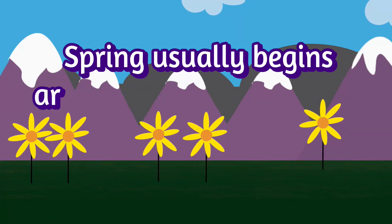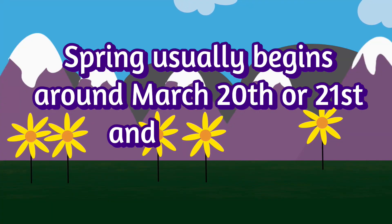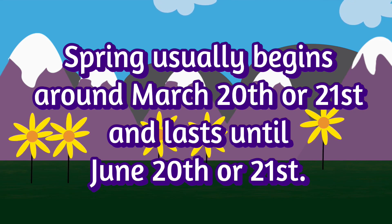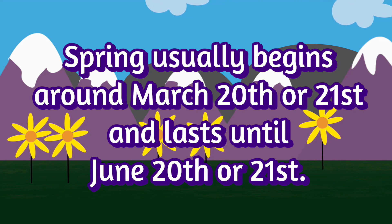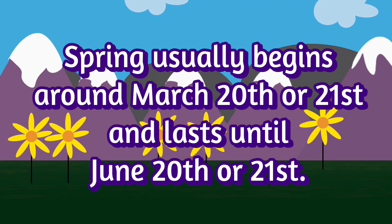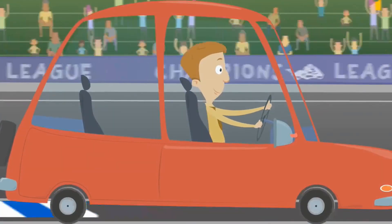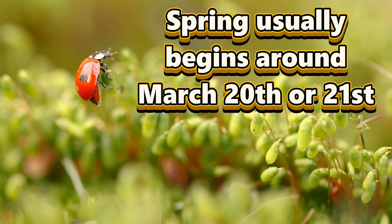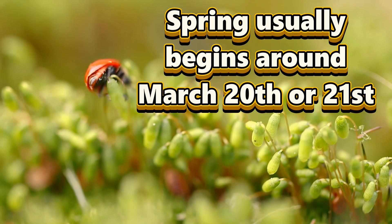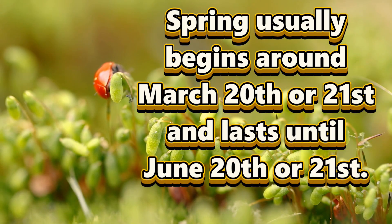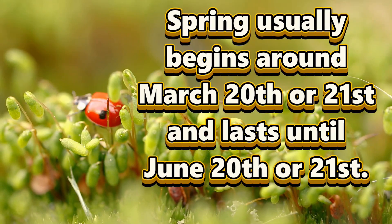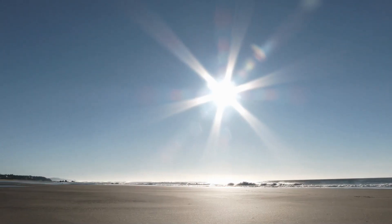Spring usually begins around March 20th or 21st and lasts until June 20th or 21st. Notice that means it's still technically spring when most of you start your summer vacation — that's something even a lot of adults don't know. It's the time of year between the cold of winter and the heat of summer.